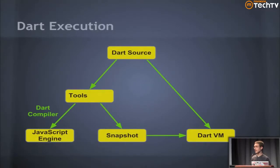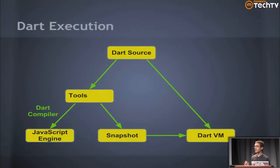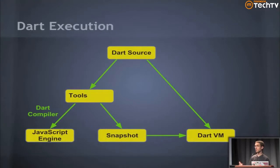The other thing we've been working on is the concept of snapshots. Snapshots allow you to take a running Dart program, snapshot that heap, serialize it, send it over the wire, and re-instantiate it on the other side. This offers tremendous value to developers who don't want to re-parse all that Dart code. You can also think of a model where a web page first compiles all Dart code, takes a snapshot, puts it in cache — then the next time you reload, it pulls the snapshot from cache instead of re-parsing all the Dart code.